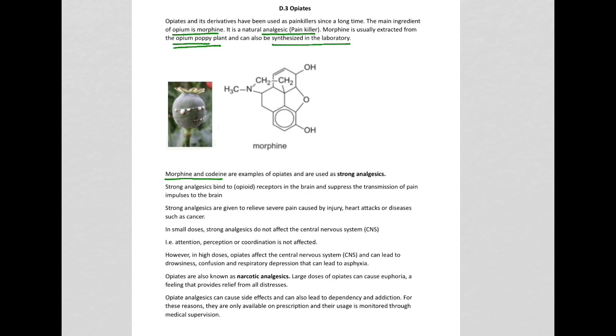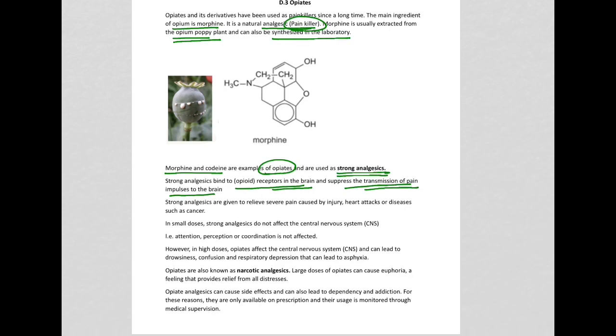Morphine and codeine are both examples of opiates and are strong analgesics. Strong analgesics bind to opioid receptors in the brain and suppress the transmission of pain impulses to the brain. This is how they function as painkillers.